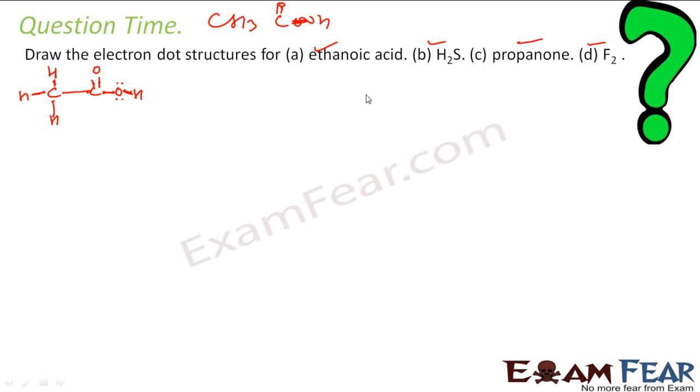Next is H2S. I have 1 sulfur, 2 hydrogen. Sulfur has 6 electrons, hydrogen is 1 each. They share like this. Sulfur will assume it has got 8, hydrogen will assume it has got 2.